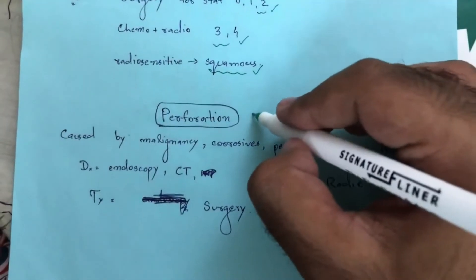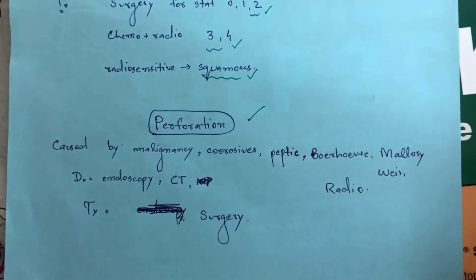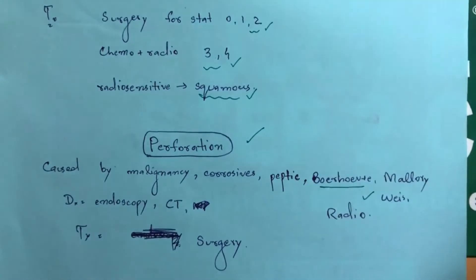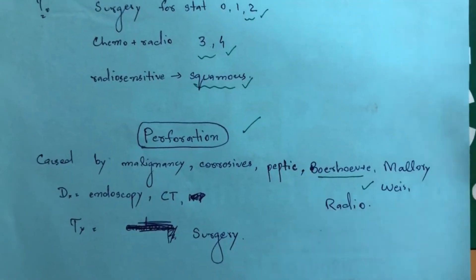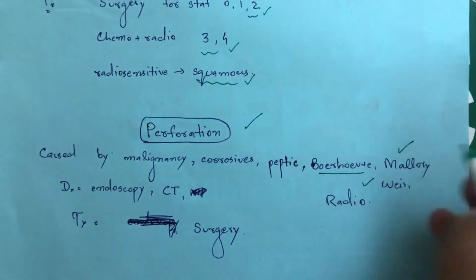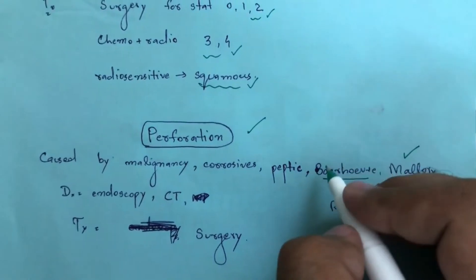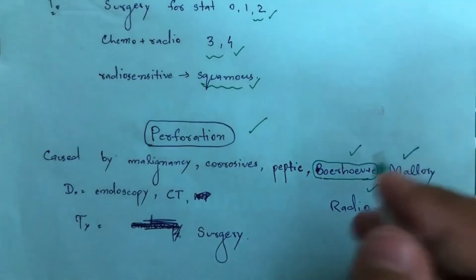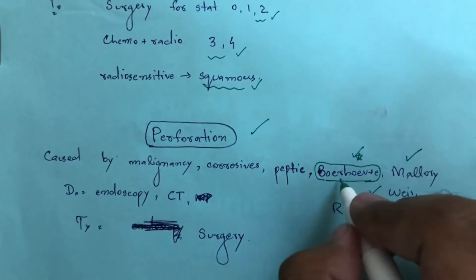The last topic is esophageal perforation. Causes include malignancy, corrosive ingestion, iatrogenic tears, and Boerhaave syndrome. In Boerhaave syndrome, forceful vomiting causes a tear with mediastinal involvement. Malignancy-related perforation tends to be mild, while Boerhaave syndrome is severe. Diagnosis is by CT and endoscopy. Treatment is surgery.